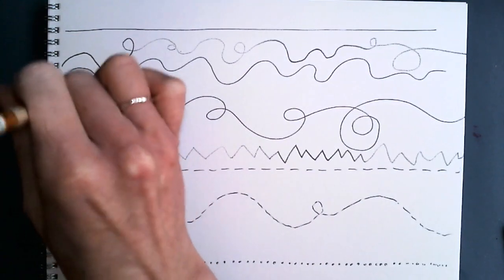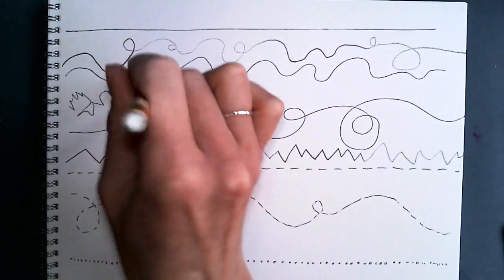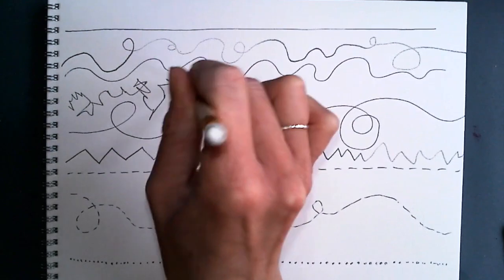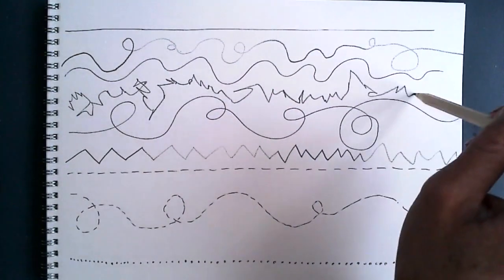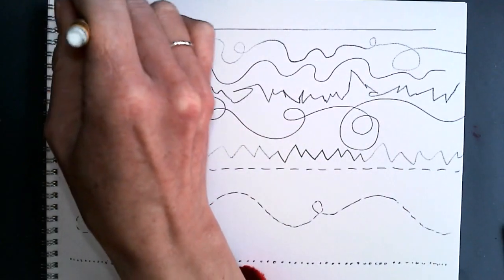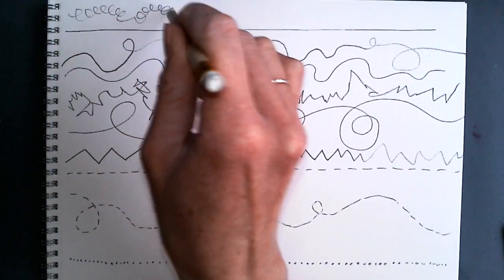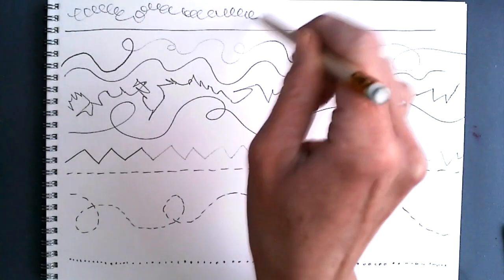You can even explore how you hold your pencil. If you hold it upright and don't lean on the page, you get a very erratic line. Even controlled scribbles are considered lines.